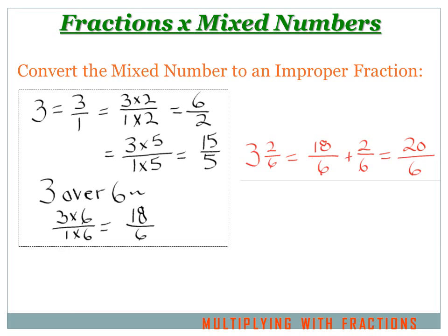If we wanted 5 as the denominator, we take 3 over 1 and multiply top and bottom by 5, and we'd end up with 15 over 5. But what we want in this problem is to convert the 3 to a fraction with 6 on the bottom. So we take 3 over 1 and multiply top and bottom by 6 — that gives us 3 times 6, which equals 18, and 1 times 6, which equals 6. Now I have 3 expressed as 18 over 6, and I can change this to 18 over 6 plus 2 sixths. 18 plus 2 equals 20, and my denominator stays the same, so 3 and 2 sixths equals 20 sixths.